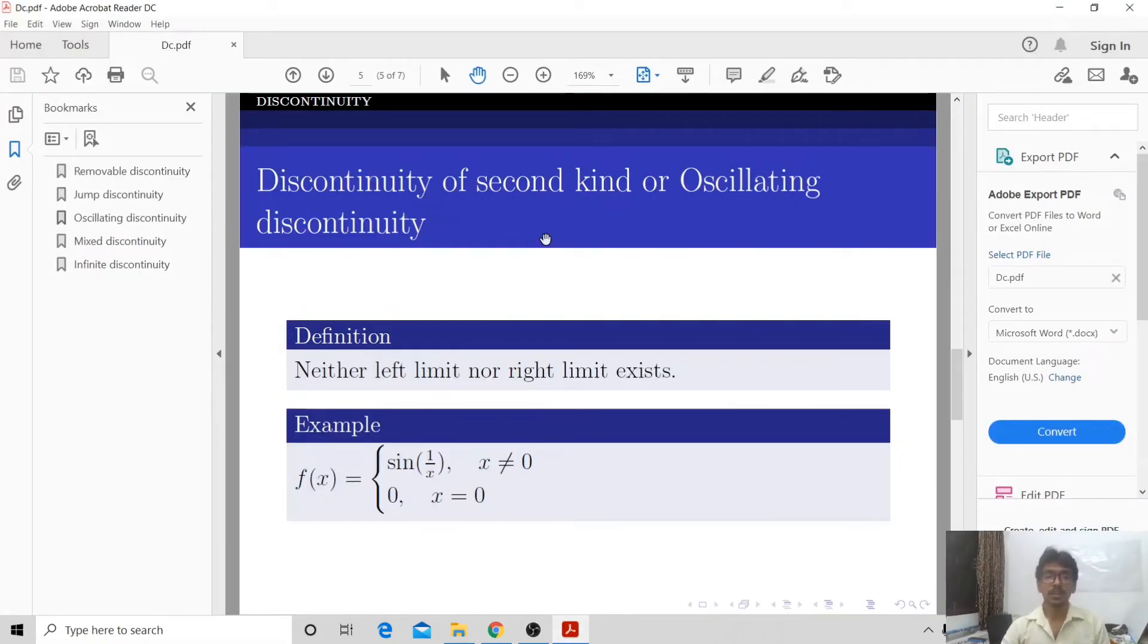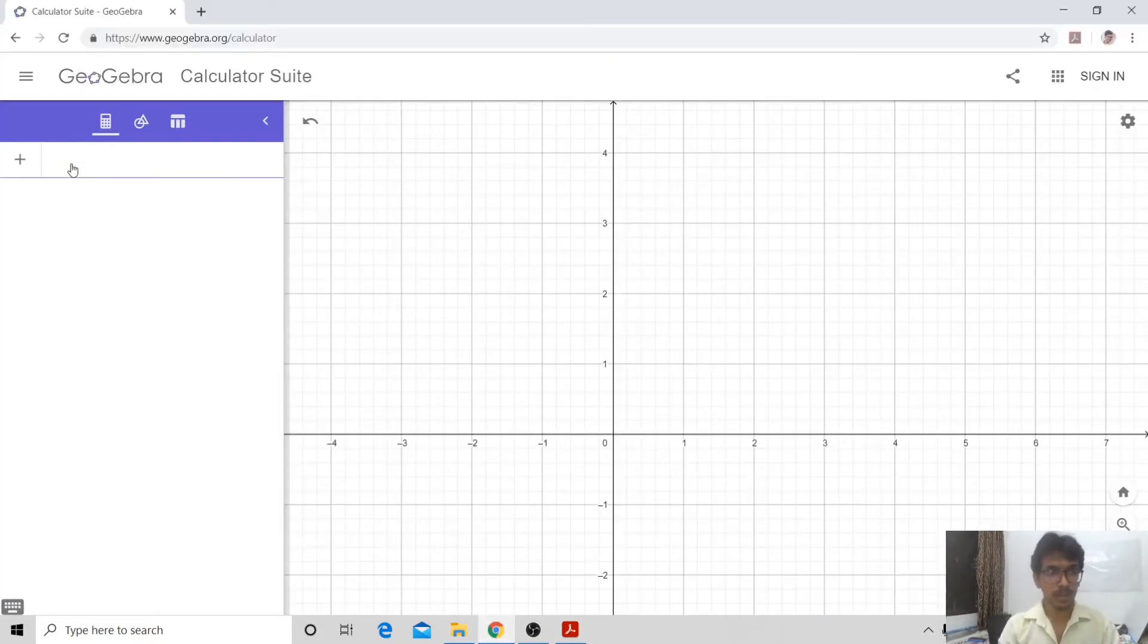Oscillating discontinuity or discontinuity of second kind. What is happening here? Neither left limit nor right limit exists. The example given here is sin(1/x) when x is non-zero and 0 when x is 0. Let us try to plot it.